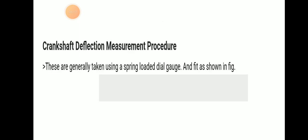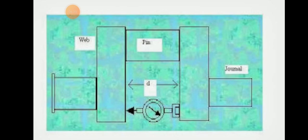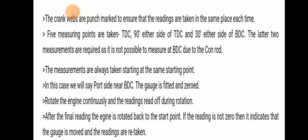Crankshaft deflection measurement procedures are generally performed using a spring-loaded dial gauge. The measurement 'd' is taken between the two crank webs. The crank webs are punch marked to ensure readings are taken in the same place every time. Five measuring points are usually taken: TDC, 90 degrees either side of TDC, and 30 degrees either side of BDC. The latter two measurements near BDC are required as it is not possible to measure exactly at BDC due to obstruction.